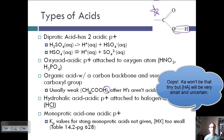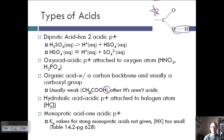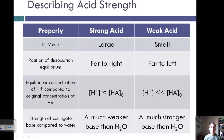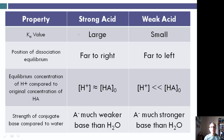Other Ka values are given in Table 14.2 on page 628 of your book. Looking at a comparison chart of acid strength: Ka is large for a strong acid and small for a weak acid. Equilibrium lies far right for strong acids and far left for weak acids. For a strong acid, [H+] is approximately equal to the original [HA]; for a weak acid, [H+] is much smaller. The conjugate base of a strong acid is much weaker than water, while the conjugate base of a weak acid is much stronger than water.